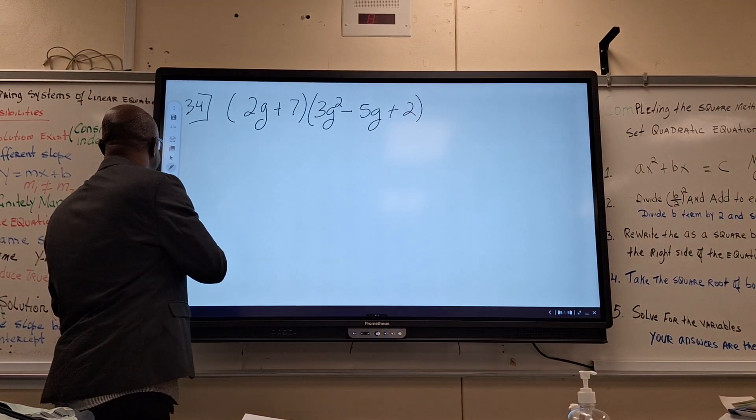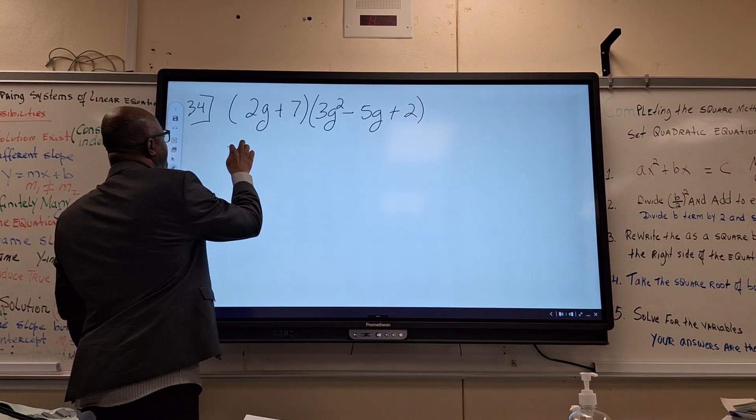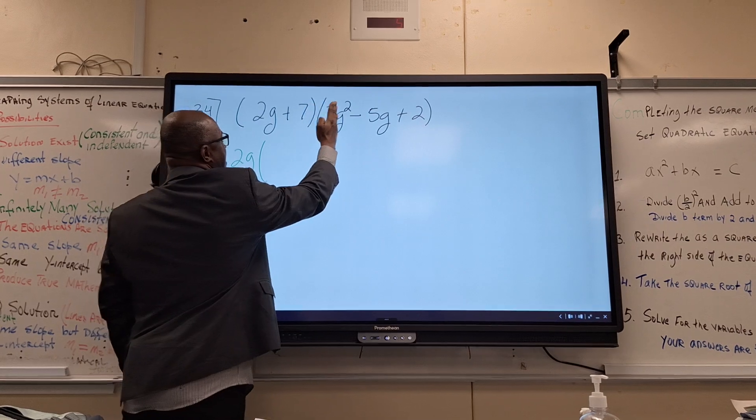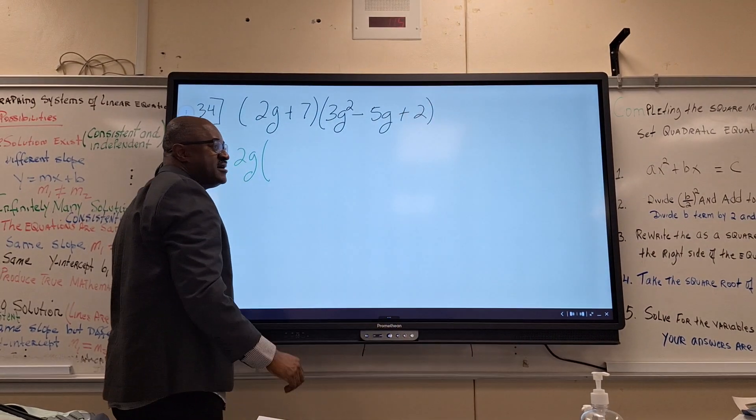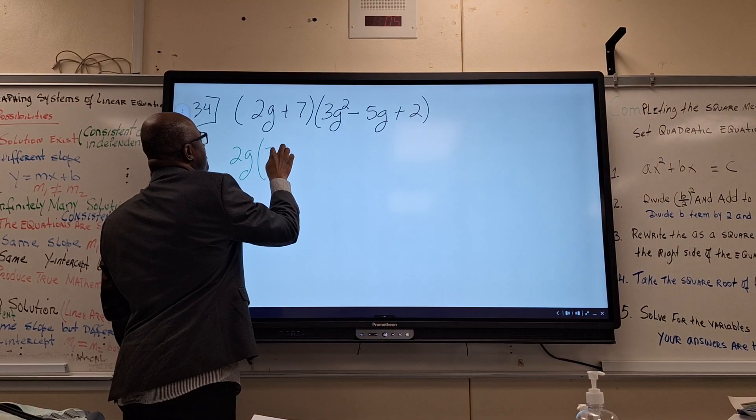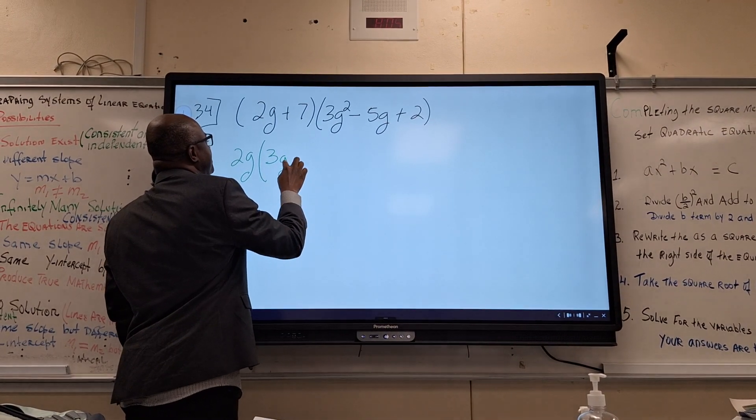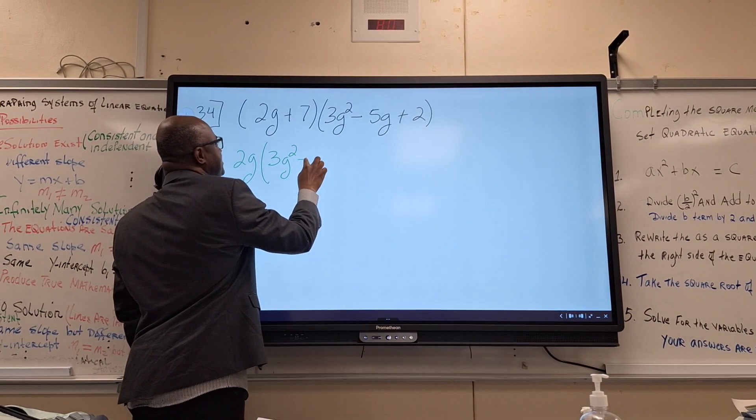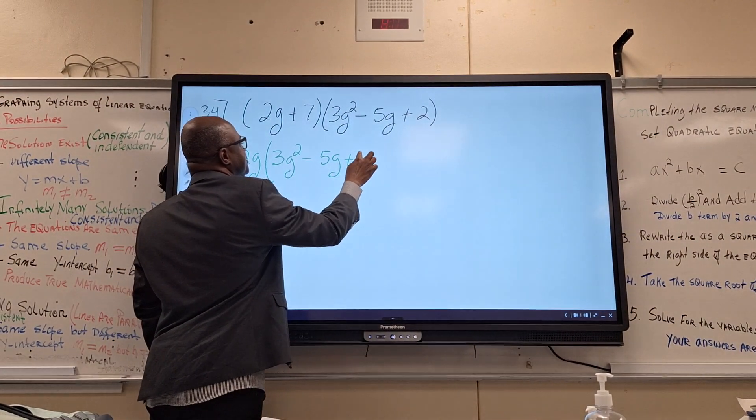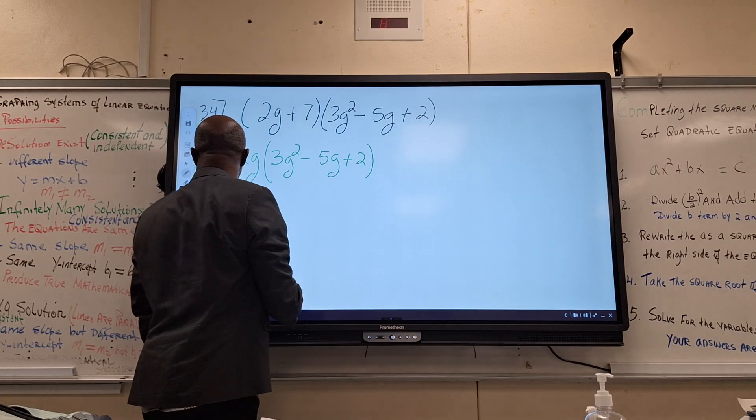How will you set this up? So we'll have 2G open parenthesis multiplied by everything inside by the other trinomial, by that trinomial which is 3G squared minus 5G plus 2. And what will you do next?